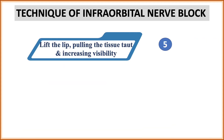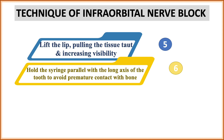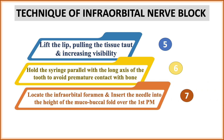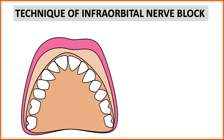After completing the above steps, lift the lip and pull the tissue taut to increase visibility. Hold the syringe parallel with the long axis of the tooth to avoid any premature contact with bone. Locate the infraorbital foramen, then insert the needle into the height of the mucobuccal fold over the first premolar. The last and very important step: always aspirate. If negative, only then deposit the sufficient amount of anesthetic solution.